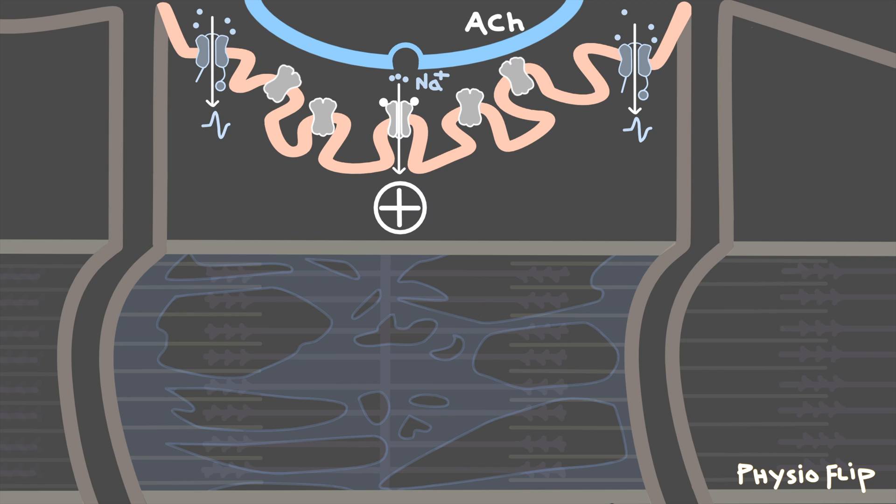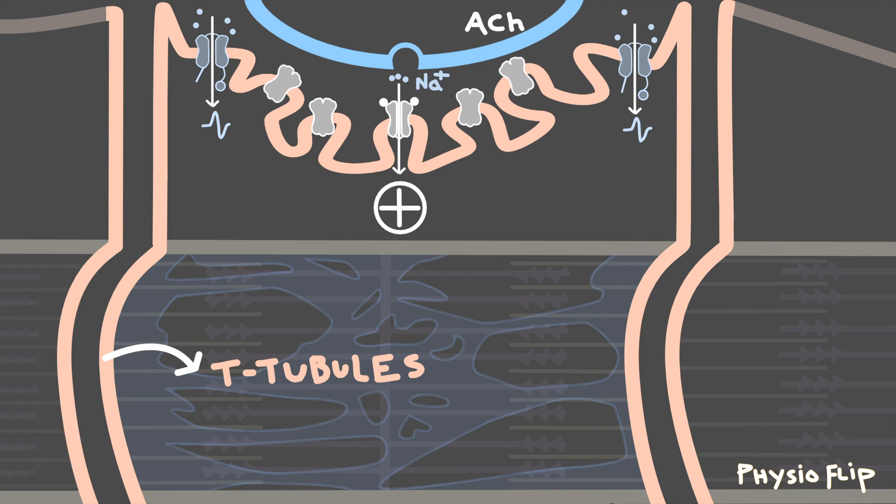First, the action potential is going to travel and spread along the membrane of this muscle fiber just like it travels down the axon of a neuron. Muscle fibers, though, have these unique structures called transverse tubules, or T-tubules, which are basically folds in the cell membrane which allow the action potentials to travel down and deep within the cell. And here's why these T-tubules are so important.